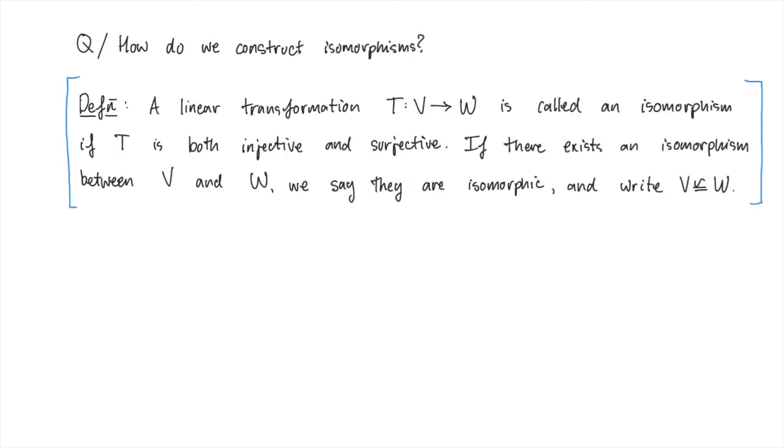Let's just recall the language that we use. A linear transformation T from V to W is called an isomorphism if it is both injective and surjective. Moreover, if there exists some isomorphism between V and W, we will say that V and W are isomorphic, and we'll write V is isomorphic to W with the symbol there.